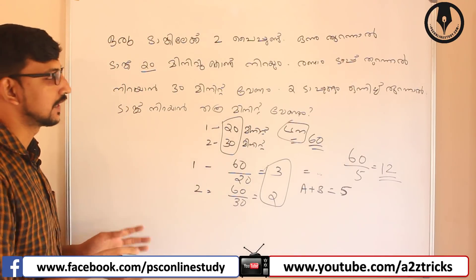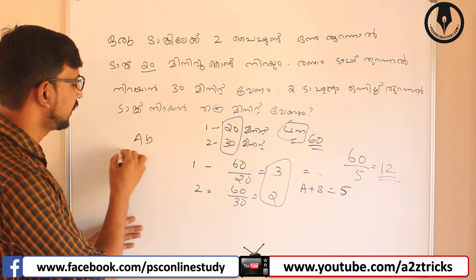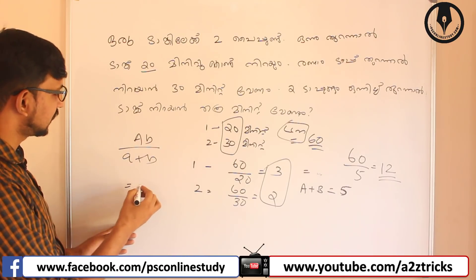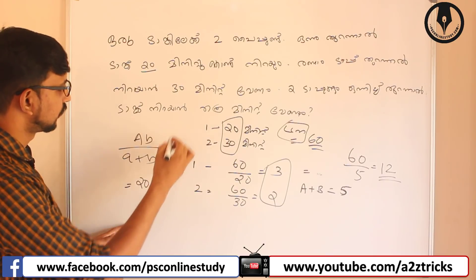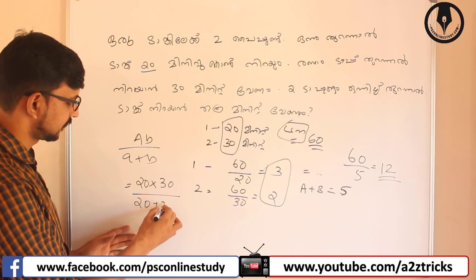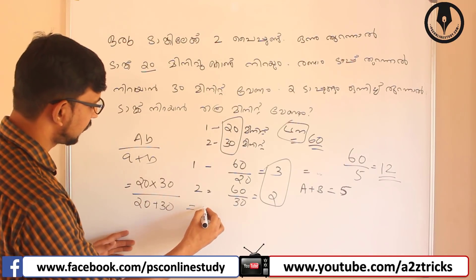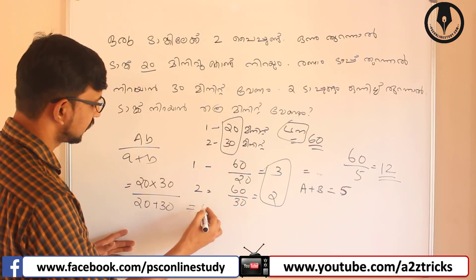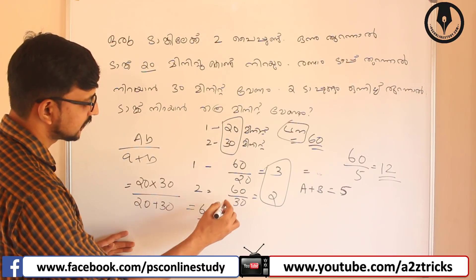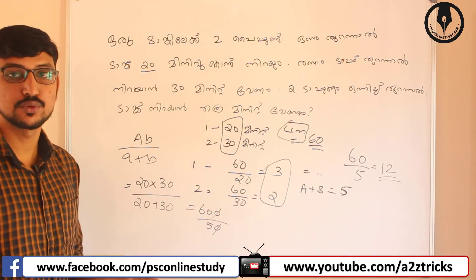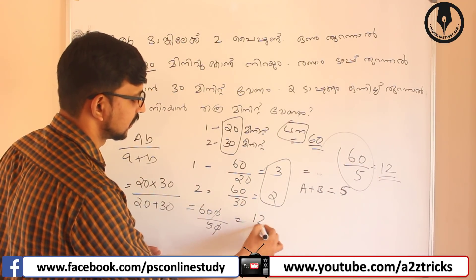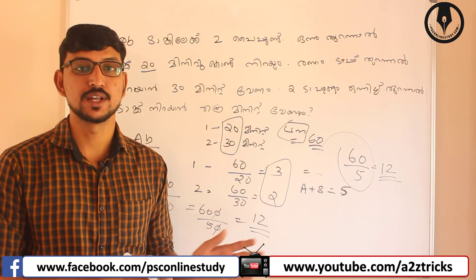Now the equation method is ab divided by a plus b. In this case the answer is 12. The answer using the equation method is 12 minutes. Now the tank is filled. The equation gives us 12 minutes.